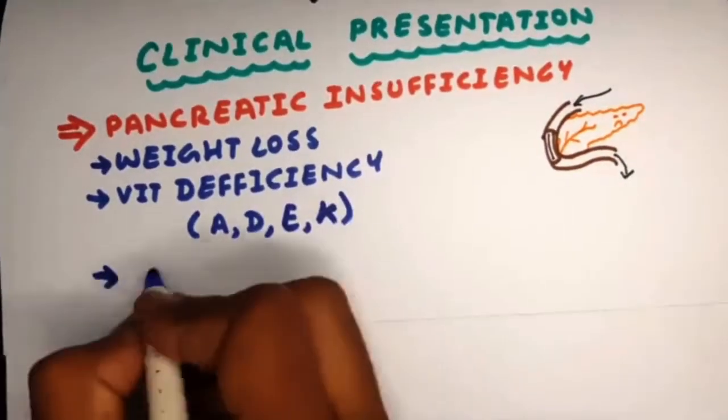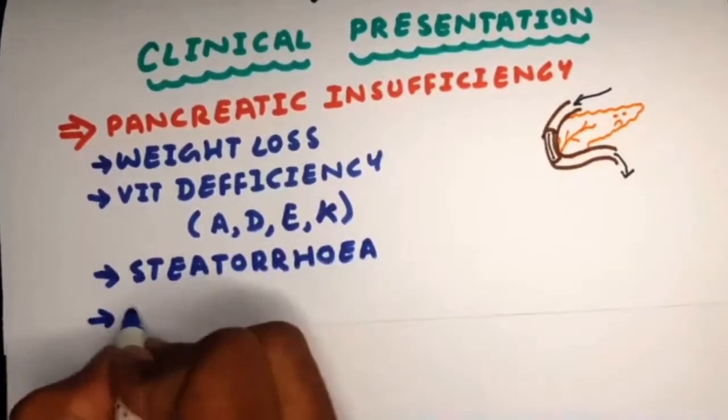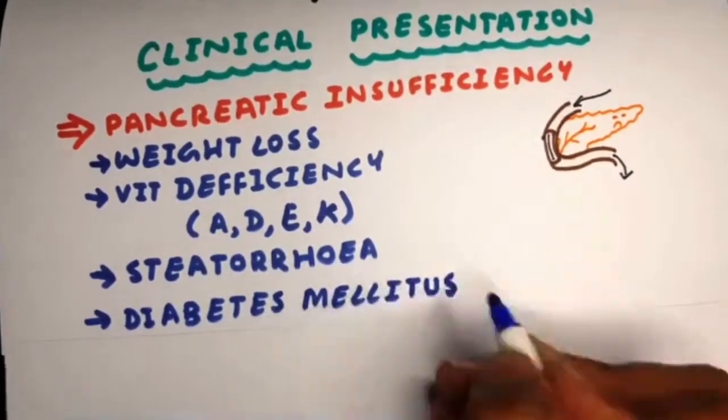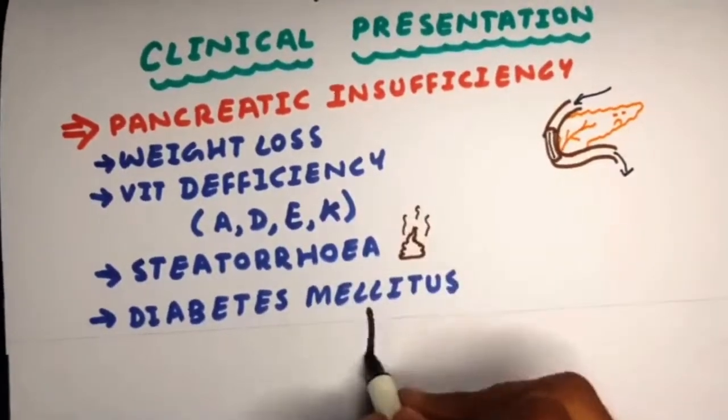All the fat that goes in comes out as is, so they'll have steatorrhea, and they'll end up with diabetes mellitus as the islets of Langerhans are also involved.